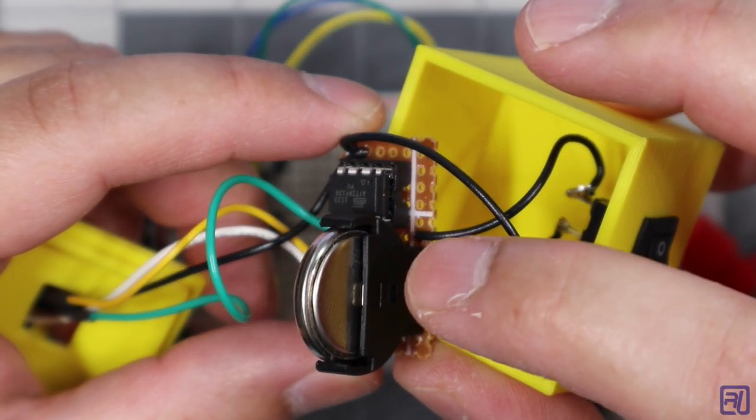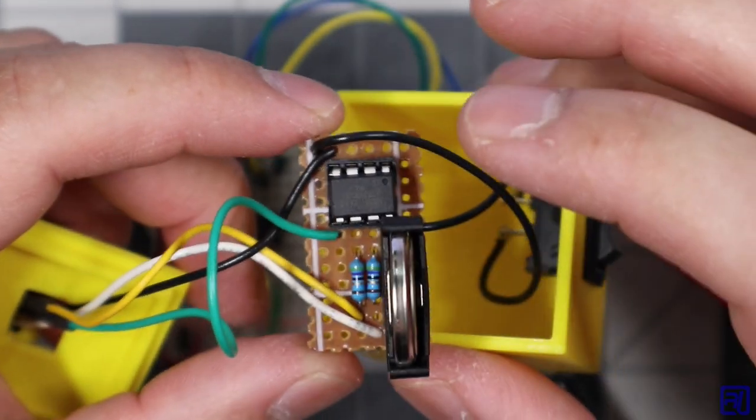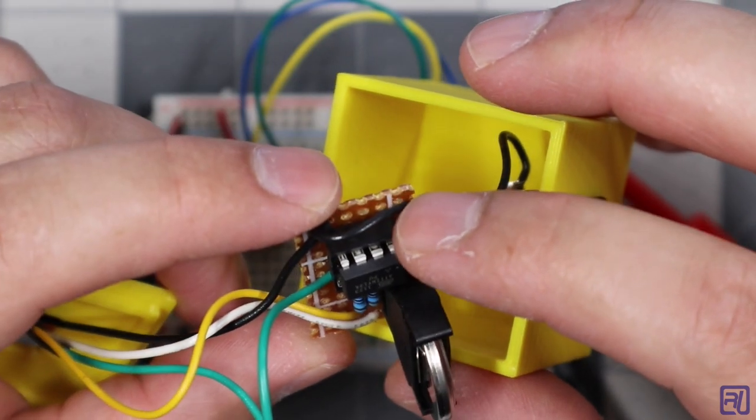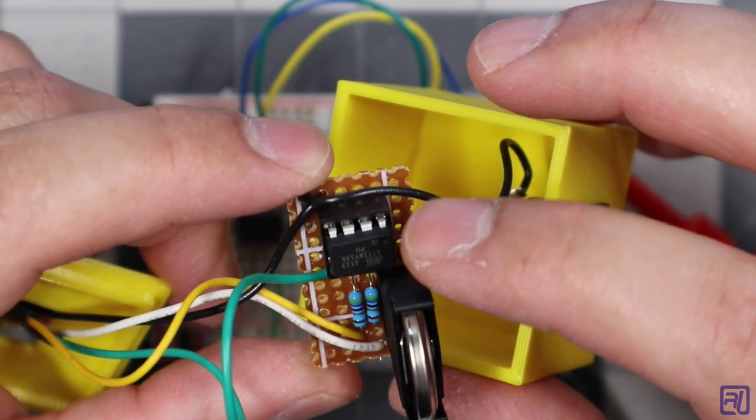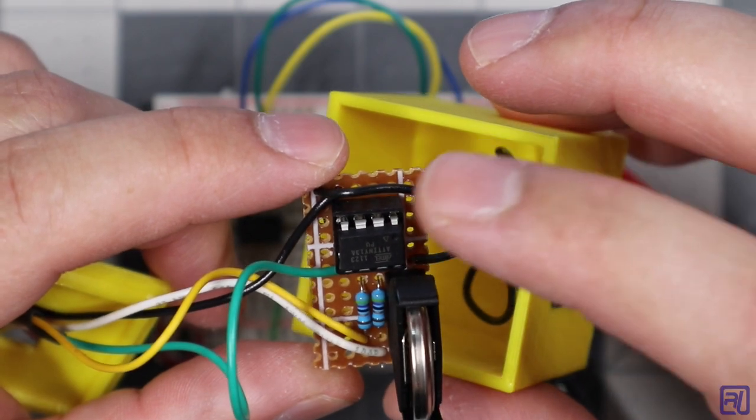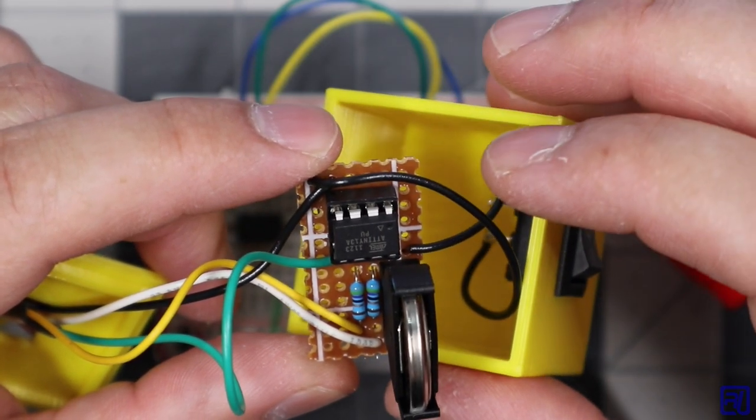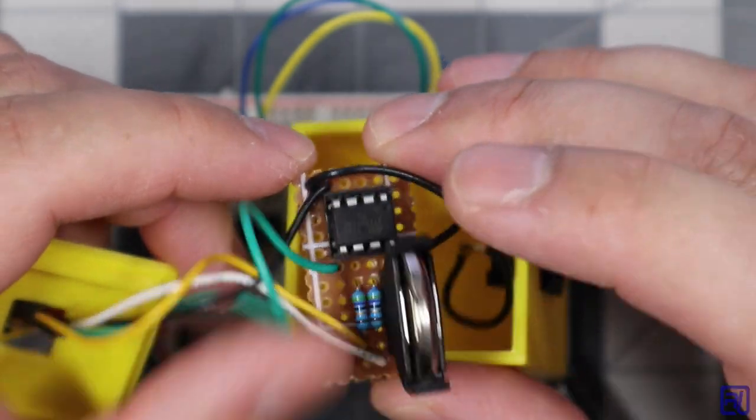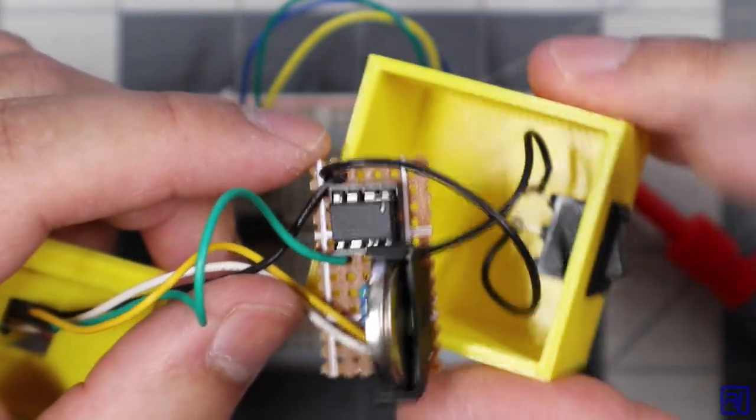I used a vertical CR2032 holder, makes it easier to replace the battery. The ATtiny sits on an eight pin socket. I recommend you always use this socket since it makes it easy to remove the chip if you ever need to replace it or reprogram it. The perf board also holds the resistors and the wiring for the LEDs and the power switch.